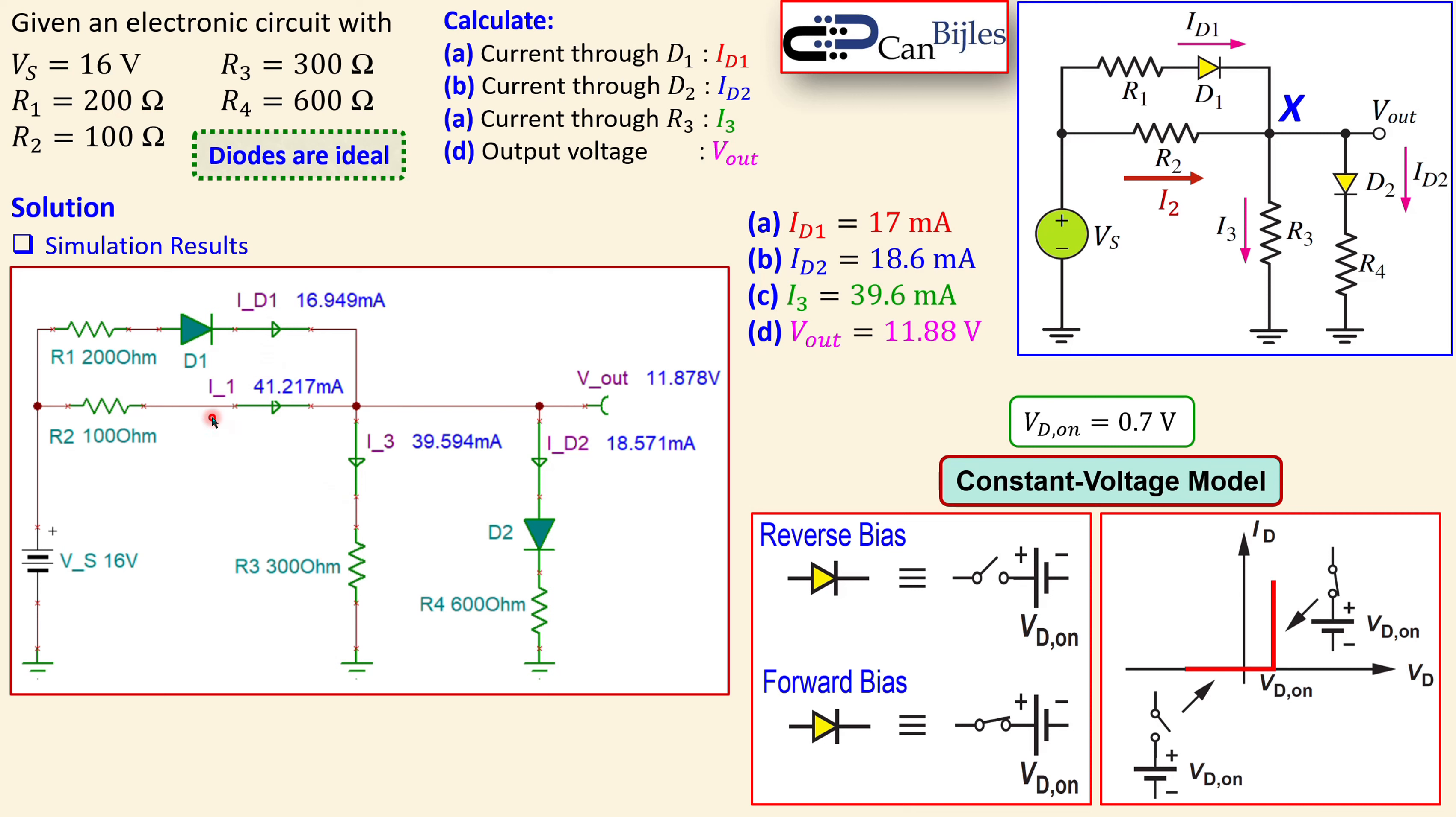We had calculated for I, this must be by the way I2. So we calculated this was 41.2 approximately. This is what we have, also very close to that one. ID1 is 16.95 milliamps approximately. So we had 17, very close to that. I3 is here 39.6 approximately. Also very close to what we have.